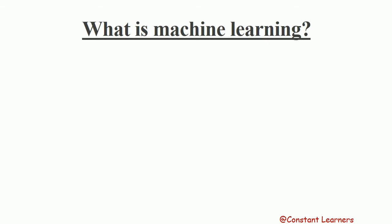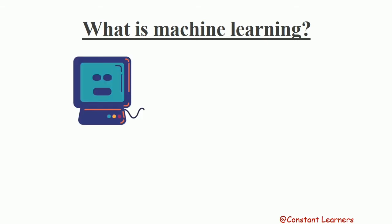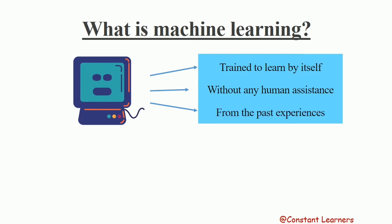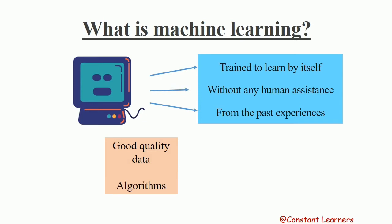Machine learning is the concept where machines or computers are trained to learn by themselves without any human assistance from past experiences. In the previous video we discussed the basic concept of machine learning, where scientists, machine learners and researchers fed the machines with good quality data, and they used algorithms to create models which could be used in the future to generate outputs with unknown inputs.